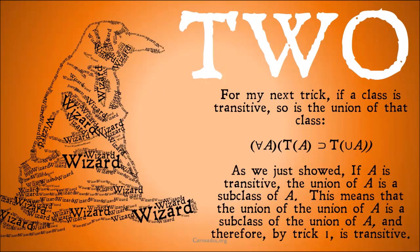For my next trick: if a class is transitive, so is the union of that class. For all A, if A is transitive, that implies that the union of A is transitive. As we just showed, if A is transitive, the union of A is a subclass of A. This means that the union of the union of A is a subclass of the union of A, and therefore, by trick one, it is going to be transitive.